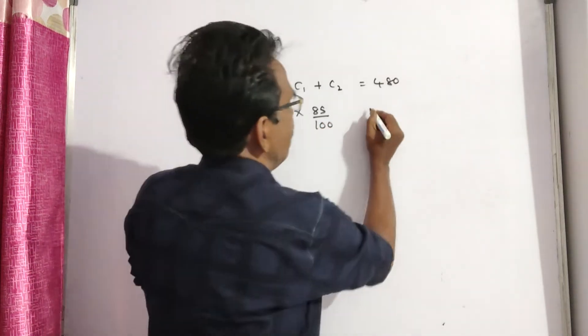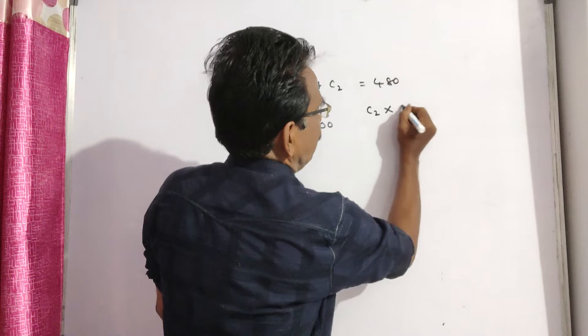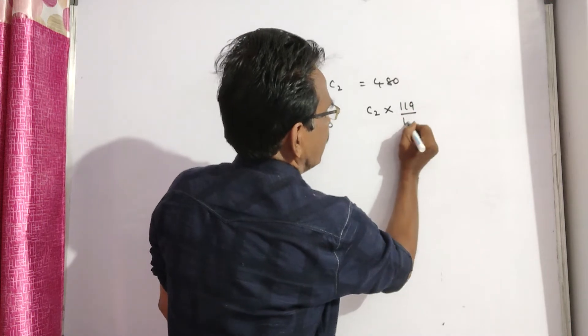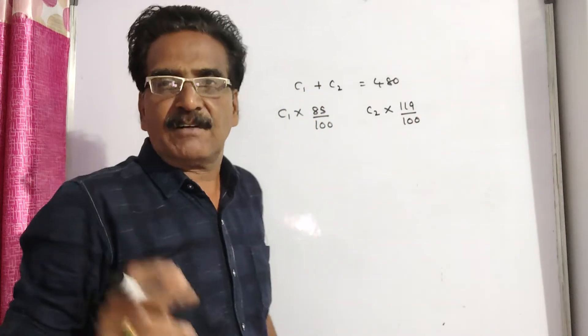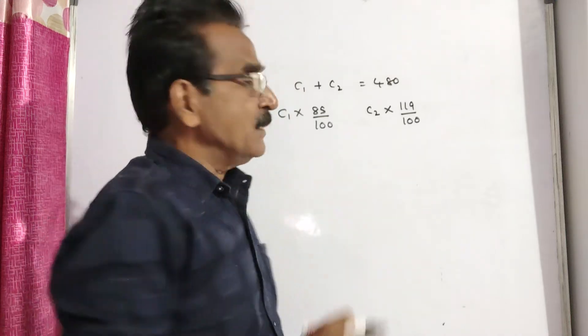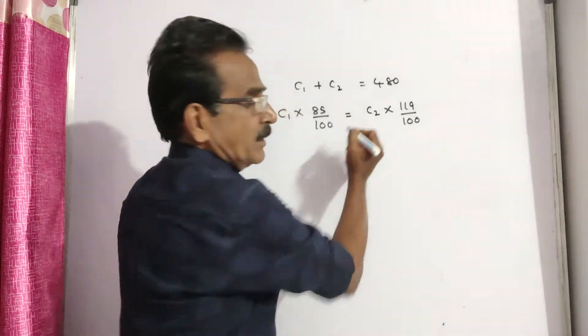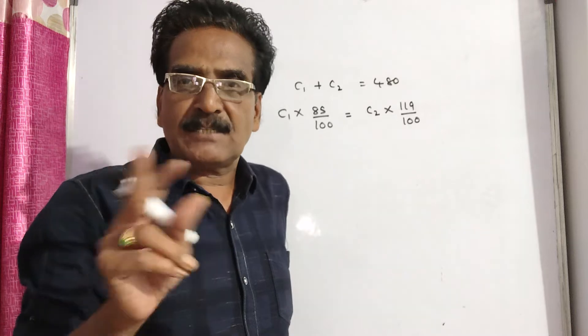It is sold at 15% loss. The selling price of the second watch is C2 times 119 by 100 because the second watch was sold at a gain of 19%. These two are equal according to the problem. Both selling prices are equal.